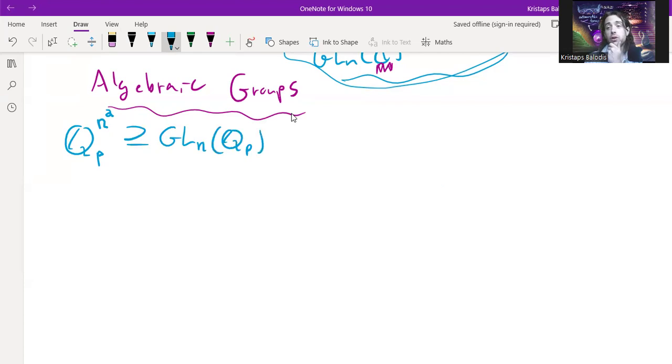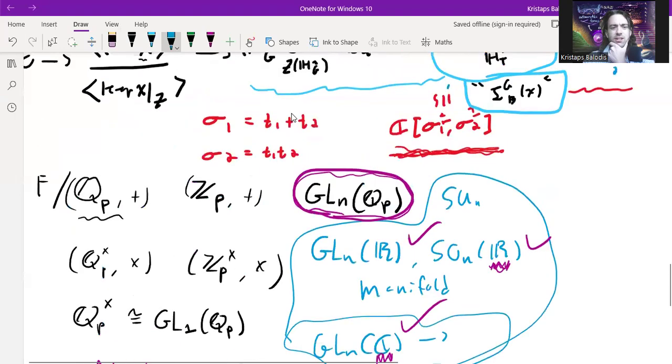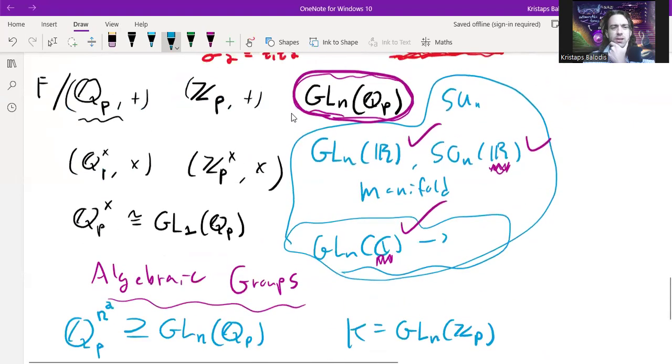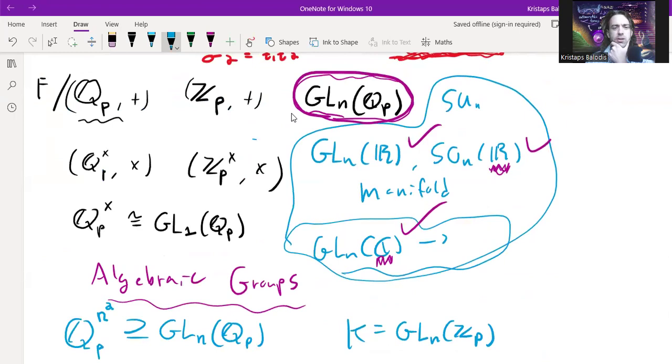It turns out some things that are important is that this still has a maximal compact subgroup. You might say big whoop, why do we care? Why did I mention a maximal compact subgroup before?